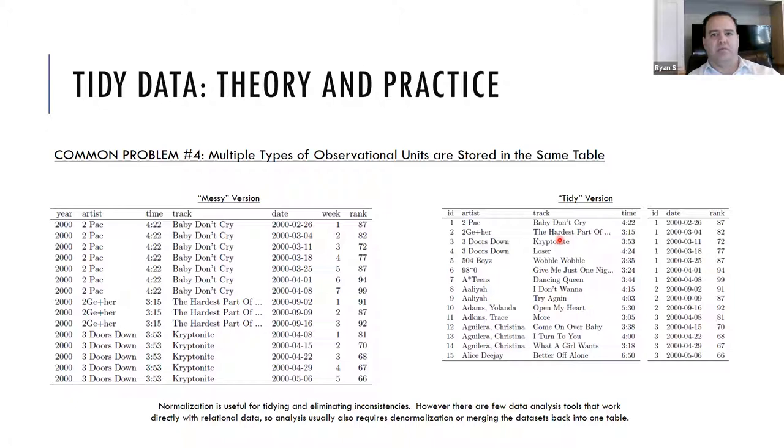So this is, I think, a pretty interesting way to think about tidy data. And this goes back to some of the previous normalization concepts that are brought up. And it says here that normalization is useful for tidying and eliminating inconsistencies. However, there are a few data analysis tools that work directly with relational data. So analysis usually also requires denormalization or merging the data sets back into one table. So part of the reason why I put these quotes around messy is because even though this is supposedly a messy and non tidy version of the table, it's denormalized in such a way that this is probably better for analysis. At least in some ways. So it maybe it's messy, it doesn't follow the tidy principles, but you may still want it in this format for analysis.